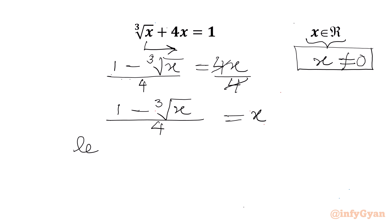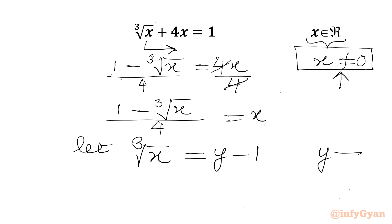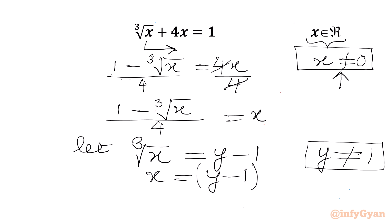Now I will use substitution. Let us consider cube root x equal to y minus 1. If x is not equal to 0, then y cannot be equal to 1. Now I will cube both sides. We will get x equal to (y minus 1) whole cube.